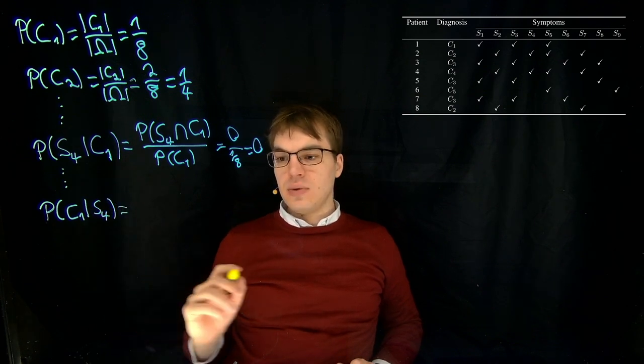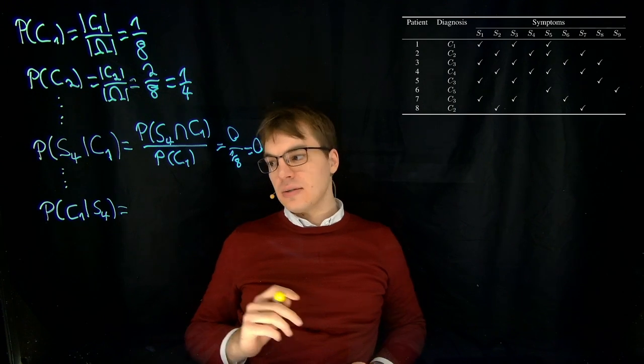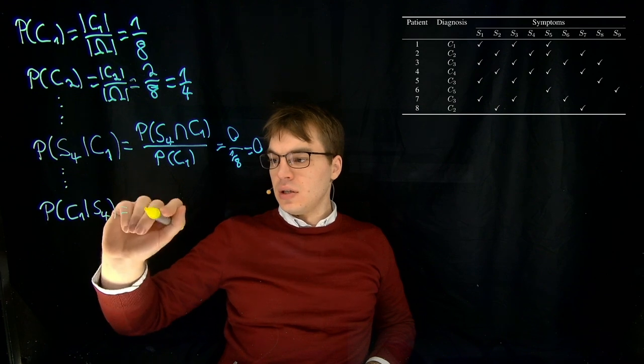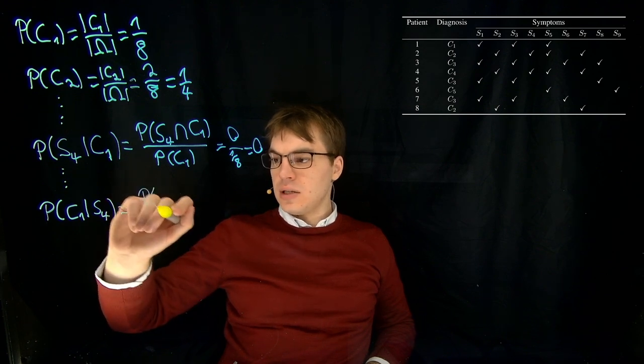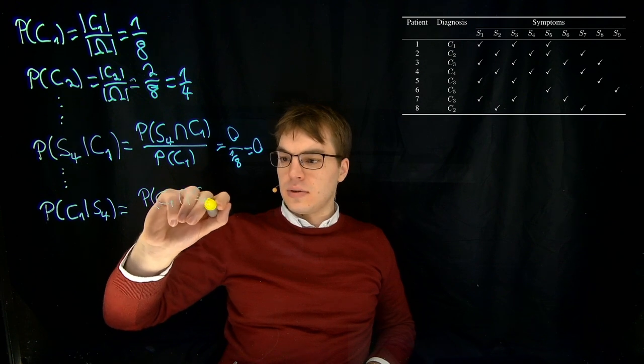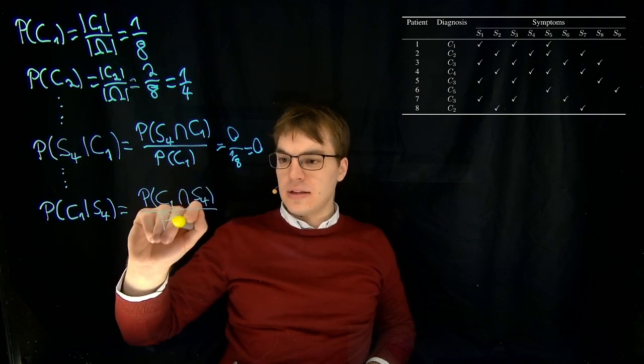And here we apply two things. So, of course, first the definition. Maybe I'll write that out in full. So this is the probability of C1 and S4 divided by probability of S4.